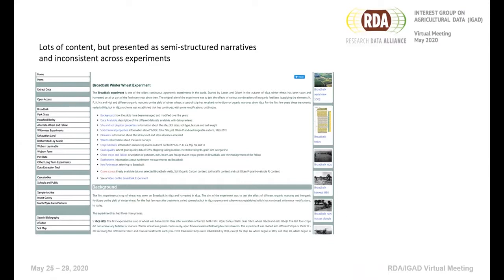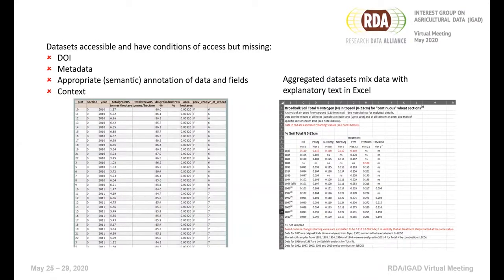The site itself is coming up to eight years old and is in need of a refresh. As for the datasets, while some are accessible and have conditions of access attached, they're not really FAIR. Very often there's no persistent identifier — no DOI. The metadata isn't presented in context with the dataset, so it's not easy to interpret and understand them. There's no appropriate semantic annotation of the data fields, which creates a barrier to interoperability. We even have datasets, particularly in Excel, where data is mixed with explanatory text, which is clearly not good practice.